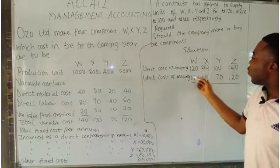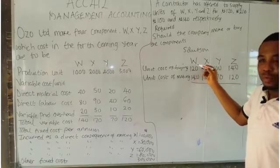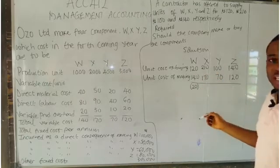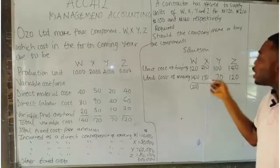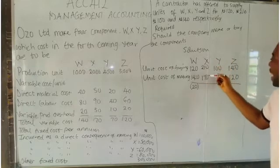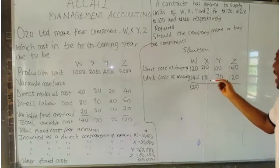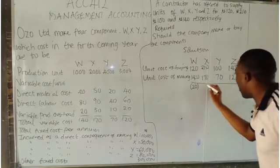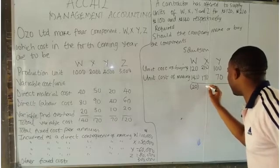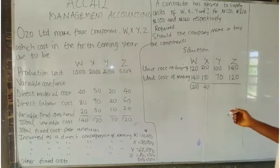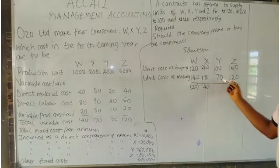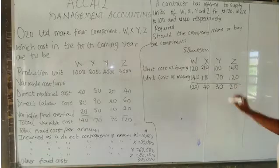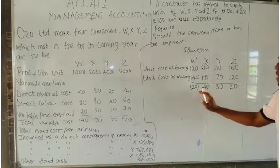If they make W, they will incur more than if they buy it — so the difference is negative. For X: 210 minus 170 gives us positive 40. For Y: 100 minus 70 gives us positive 30. For Z: 140 minus 120 gives us positive 20. The first one is negative, meaning making W costs more than buying it.